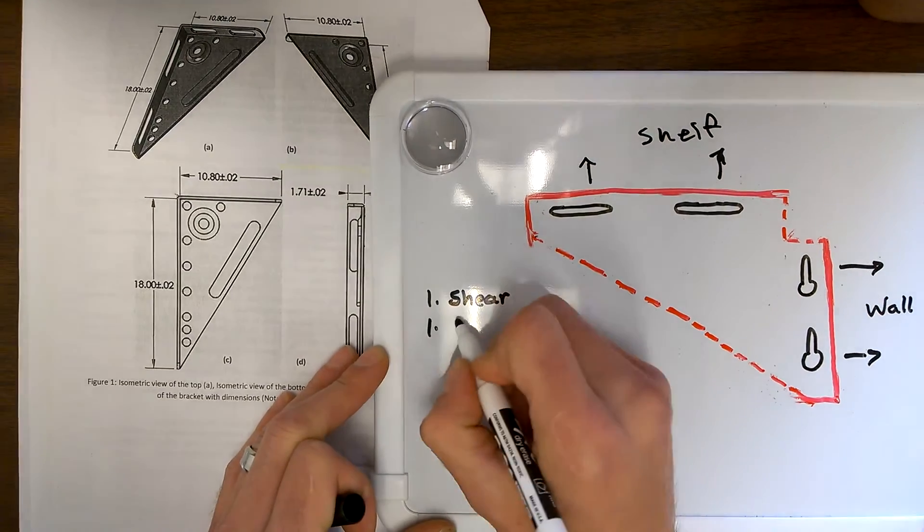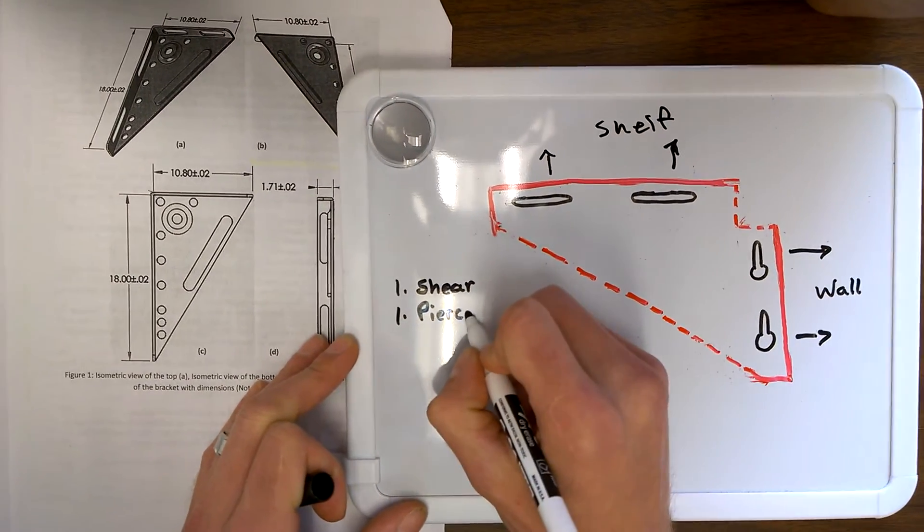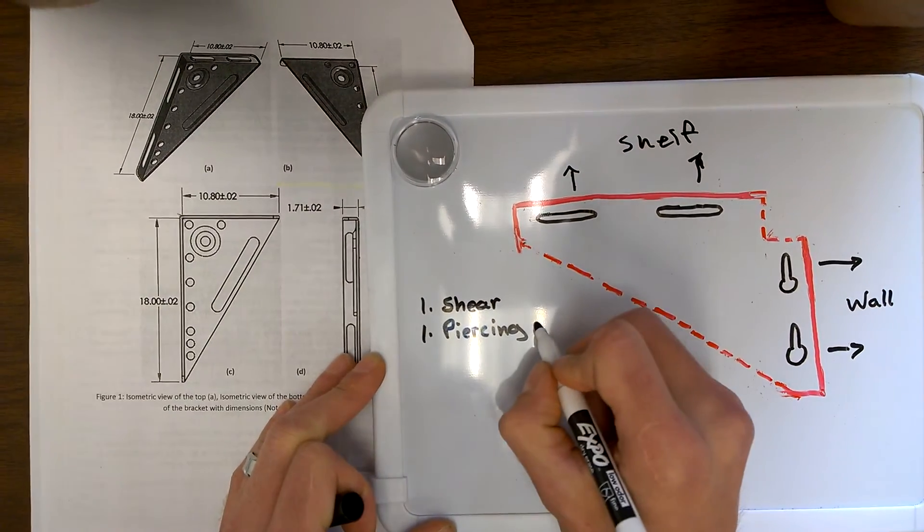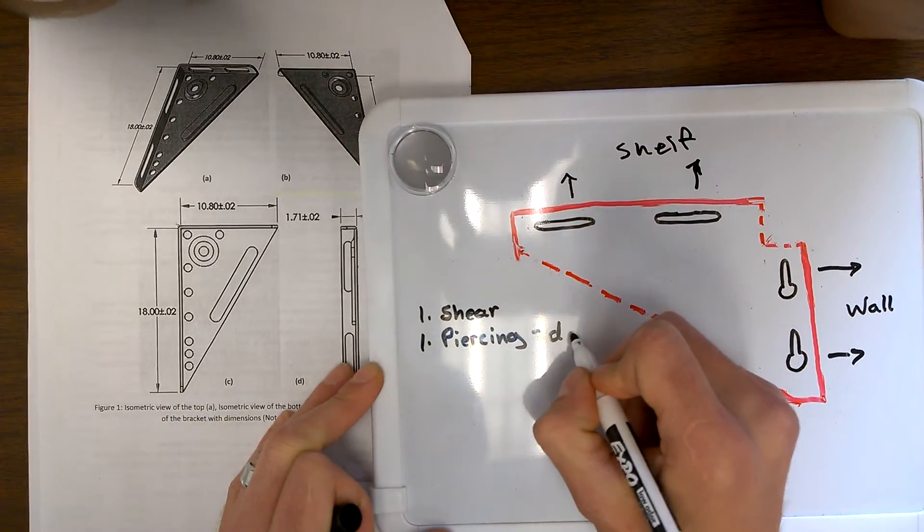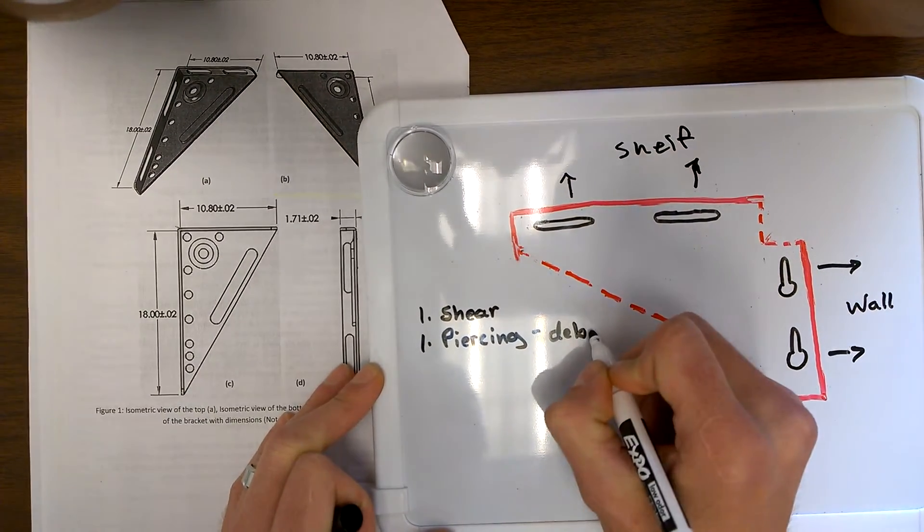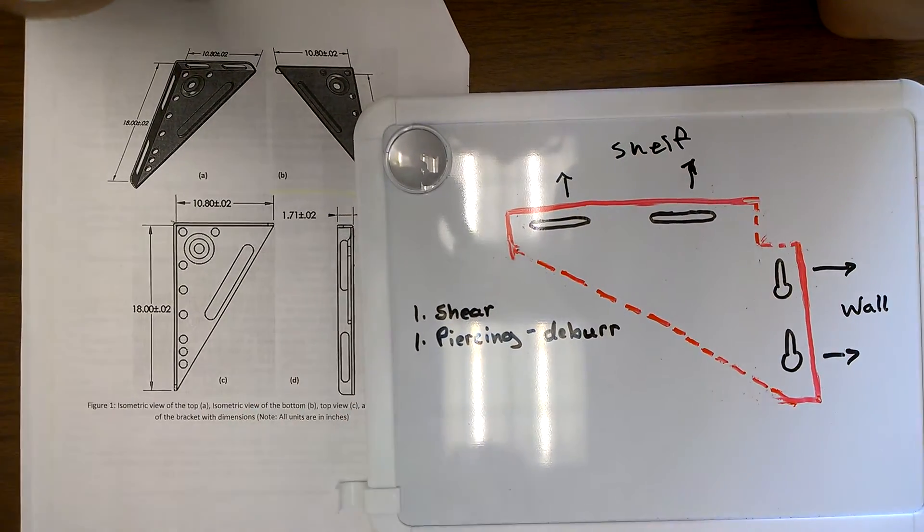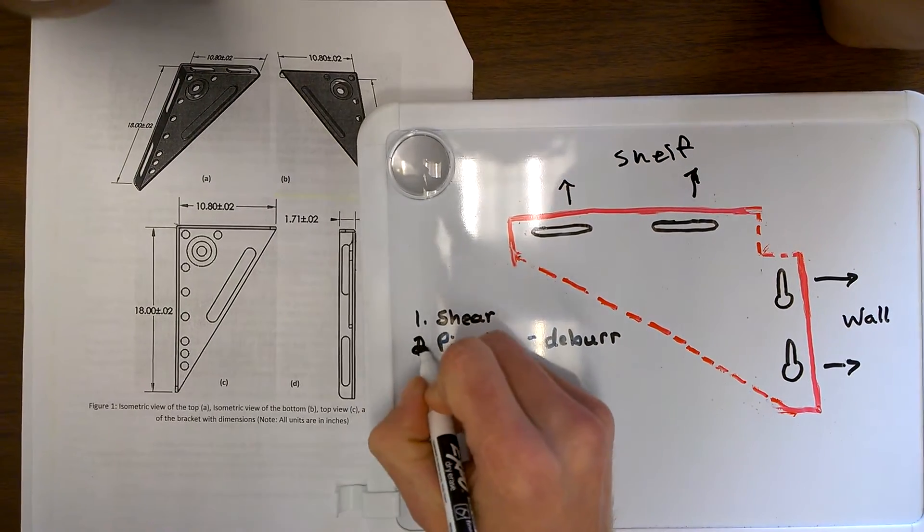So now our second step is piercing. We would also want to deburr on this step and clean up our sheared edges so we have nice clean edges and holes. And this was step two.